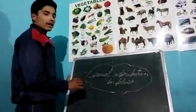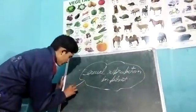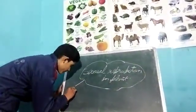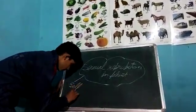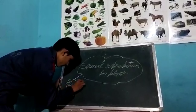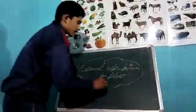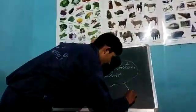So dear friends, it is divided into two parts. First is self-pollination. Second is cross-pollination.